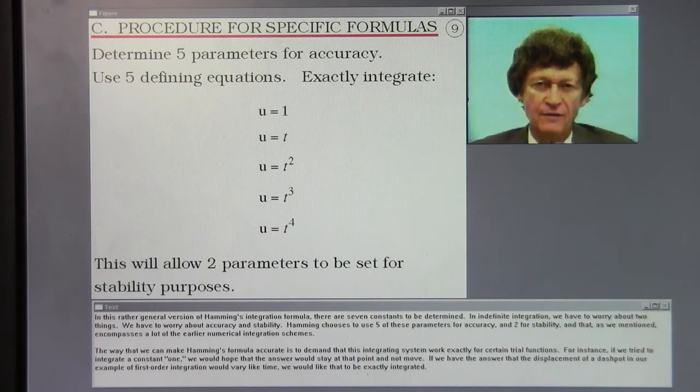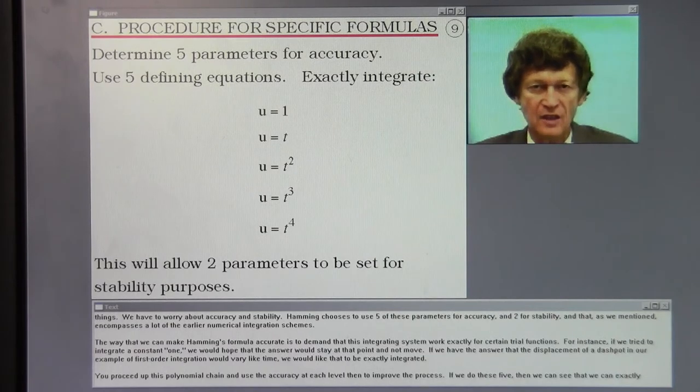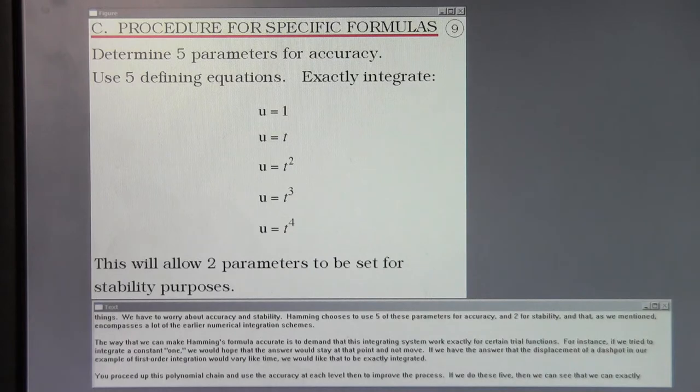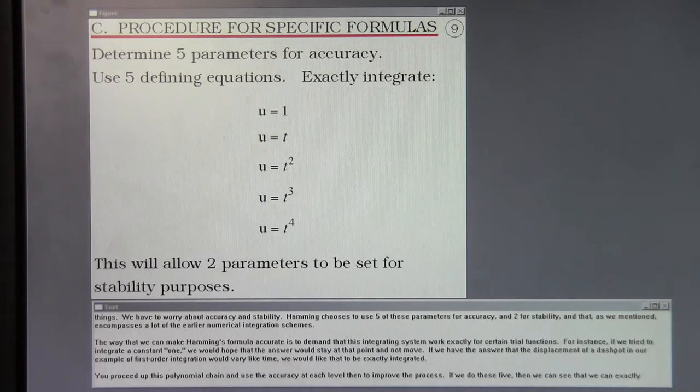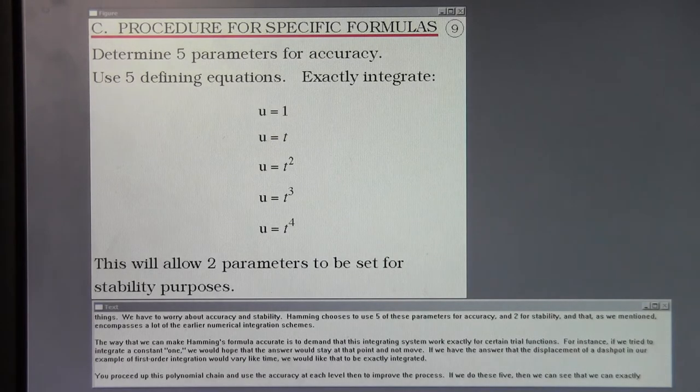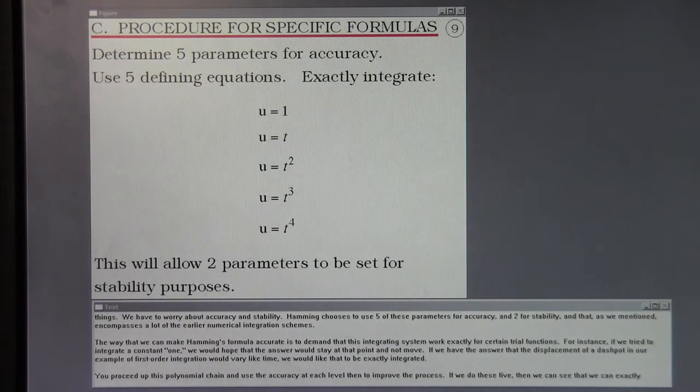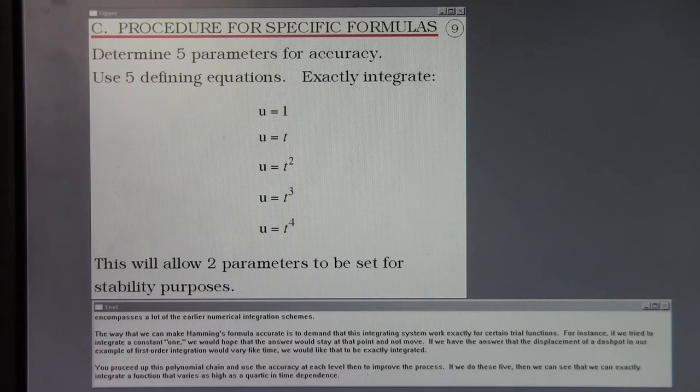In this rather general version of Hamming's integration formula there are seven constants to be determined. In indefinite integration we have to worry about two things: accuracy and stability. Hamming chooses to use five of these parameters for accuracy and two for stability. And that encompasses a lot of the earlier numerical integration schemes.